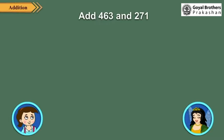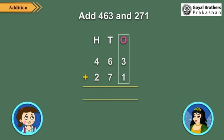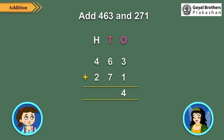Now let us add 463 and 271. Write the numbers in columns. Add the ones: 3 ones plus 1 one is equal to 4 ones, write 4 under the ones column. Add the tens: 6 tens plus 7 tens is equal to 13 tens, which is 1 hundred plus 3 tens, so write 3 under the tens column and carry over 1 hundred.